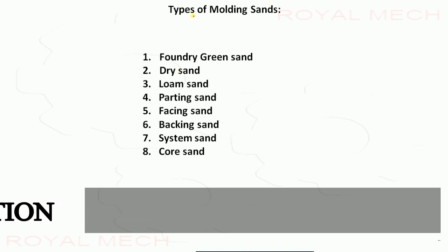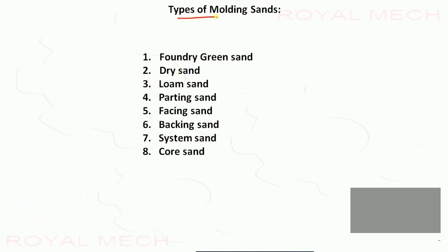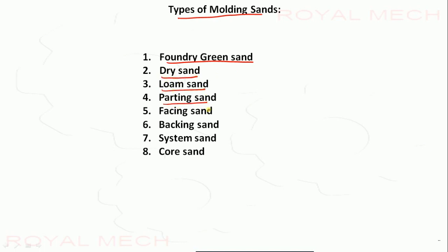There are totally eight types of molding sands: foundry green sand, dry sand, loam sand, parting sand, facing sand, backing sand, system sand, and coarse sand. Let's study each of these types.